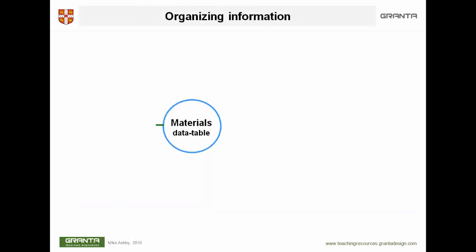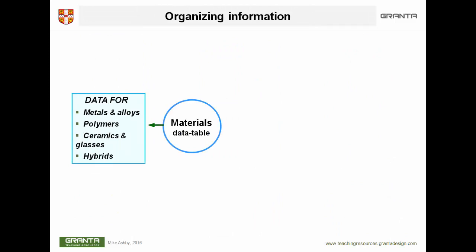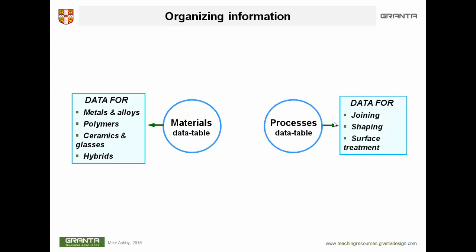How are we going to organize material data? There is a data table of materials and their properties containing data for metals and alloys, polymers, ceramics and glasses, and hybrid materials — composites, foams, and anything made by mixing two materials together. It contains another data table with information about processes: shaping, joining, and surface treatment. These two data tables are linked — materials that can be processed in a particular way are linked to those processes, and vice versa.